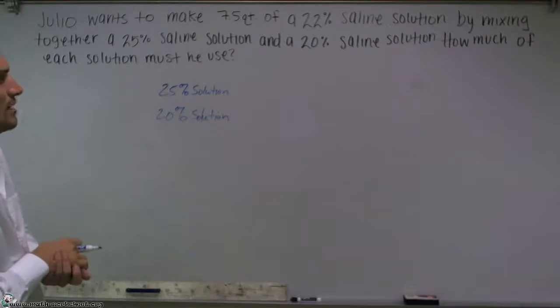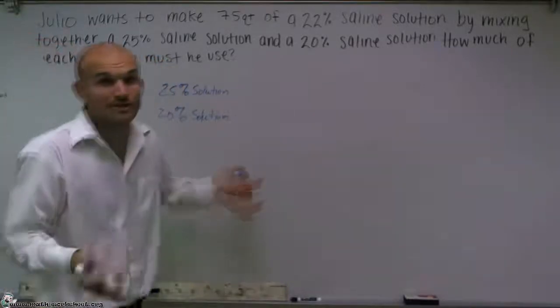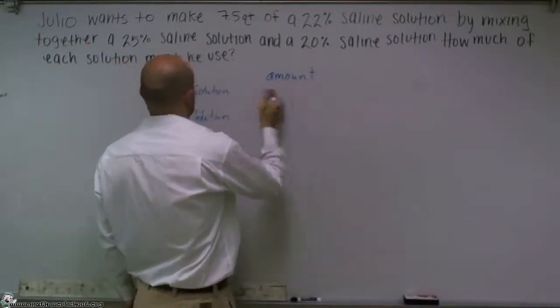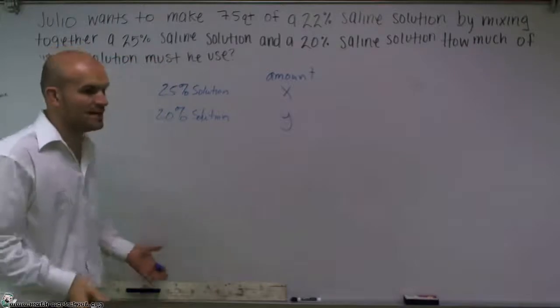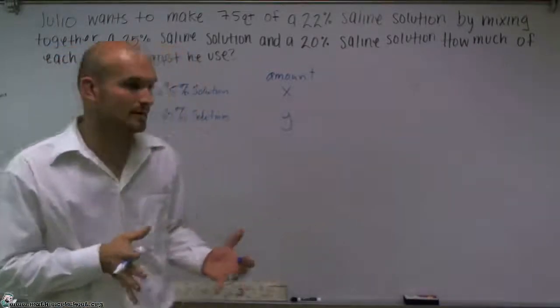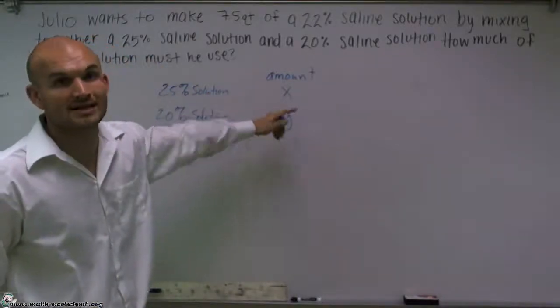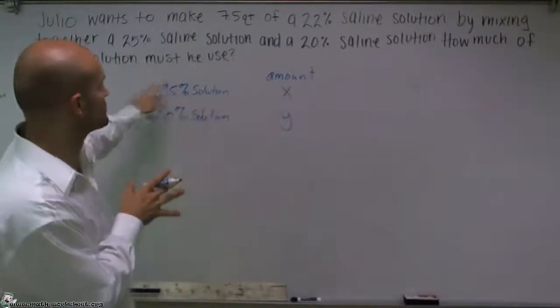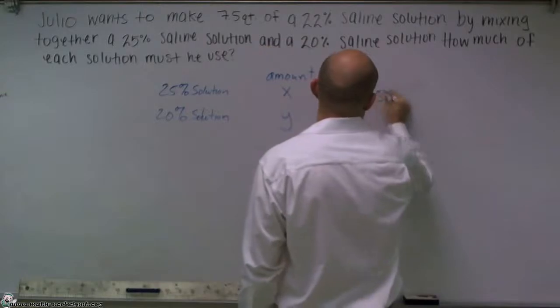Now, a couple of things that we were talking about that we know about it. One is we know that we need to know how much of each solution, which we don't know. So that's going to be our unknown is the amount. So let's make the 25% solution x and the 20% solution y. And then the concentration of each amount we can represent. So it's going to be 25% times our multiplier x is going to be how much percentage of our solution in that amount. So I can write 0.25x.